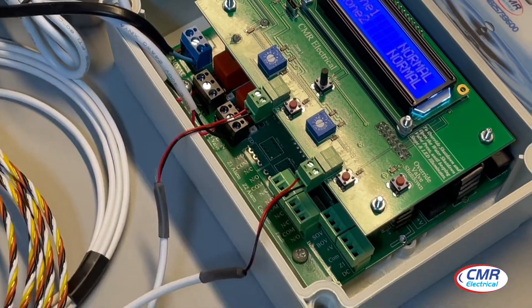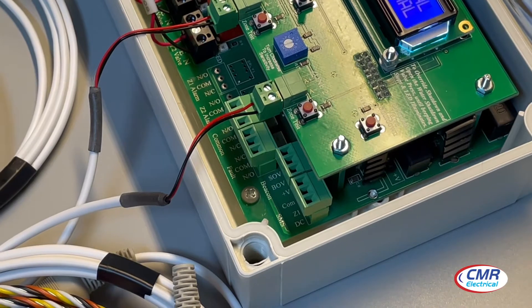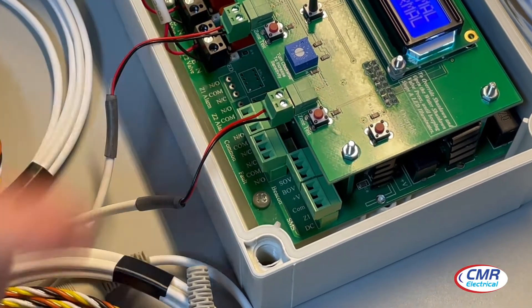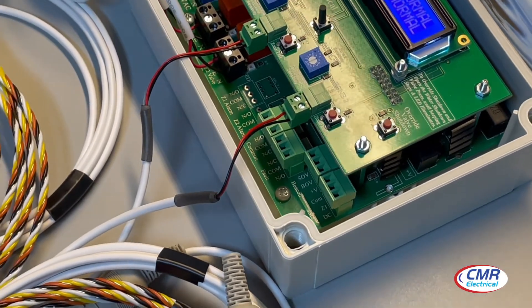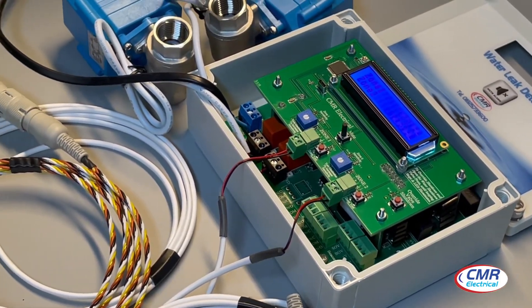Moving along, you have a common alarm volt-free contact. This is standard with the LD2-3 product. This can also be connected to a BMS system. When the panel goes into alarm, it will notify the BMS system that an alarm has occurred.